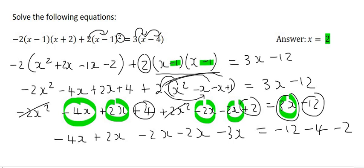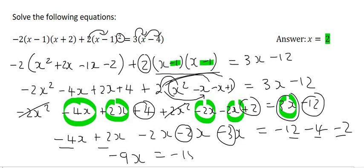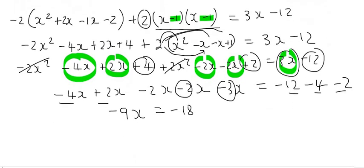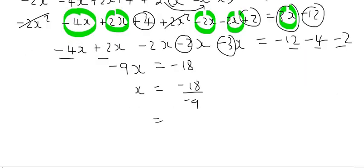We can then put all these x's together. Use your calculator if this part is tricky. Minus 4 plus 2 is minus 2. Minus 2 minus 2 is minus 4. Minus 4 minus another 2 — that's minus 6. And then this over here is minus 9, so it's minus 9x. On the right hand side we're going to have minus 12 minus 4, which is minus 16. And minus 16 minus another 2 — that's minus 18. Then to get x alone you have to divide both sides by minus 9. The negatives will cancel out, and 18 divided by 9 is 2.